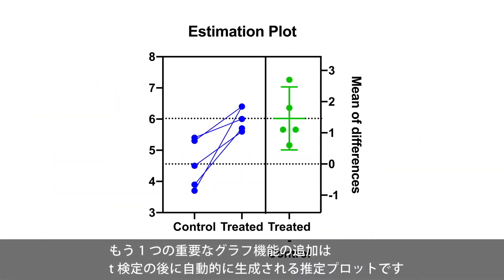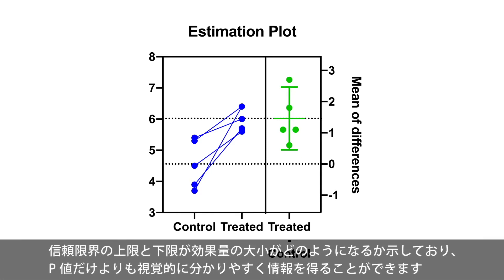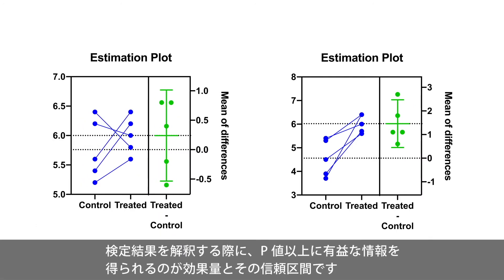Another important graphical addition is the estimation plot, which is automatically generated after both paired and unpaired t-tests. With this graph, the raw data from both groups are plotted on the left y-axis. On the right y-axis, the difference of the group means is plotted along with its 95% confidence interval. This visualization provides more information than a p-value alone, as the upper and lower confidence limits show how large and small the effect size could be. The effect size confidence interval can be used to reach the same conclusion as the p-value, but offers a more informative way of inspecting the results of the test.